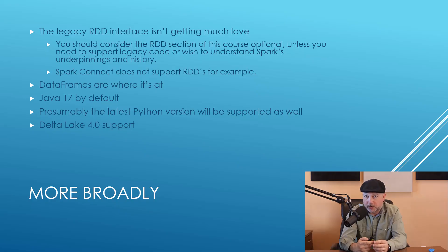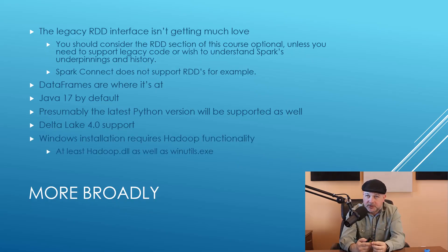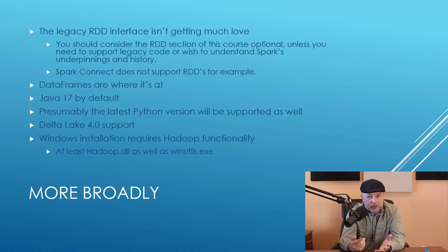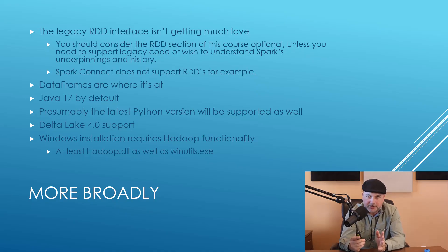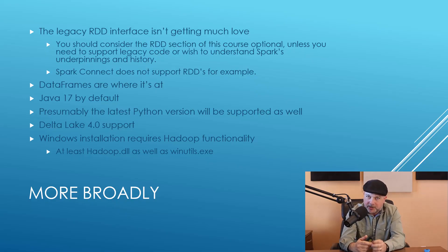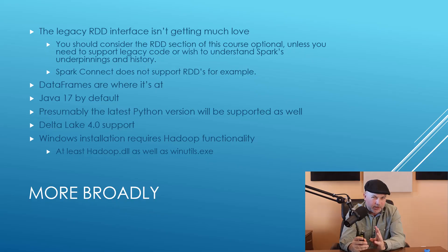Delta Lake 4 support is rolled into Spark 4. There have also been changes in Windows support — it's always been something of an afterthought for Apache Spark. Spark now depends more heavily on Hadoop, and on Windows, you can no longer get away without a fake boilerplate Hadoop setup. Not only do you need winutils.exe, you also need a Hadoop.dll file. That's been covered in the setup lecture. Spark 4 will be using Hadoop for a lot of local file I/O. And with that, let's jump into the basics of Apache Spark next and start getting our feet wet.